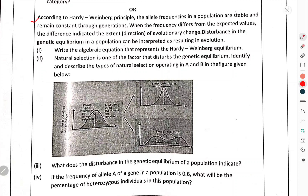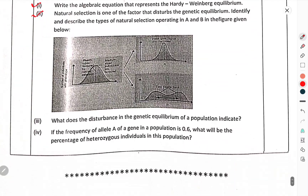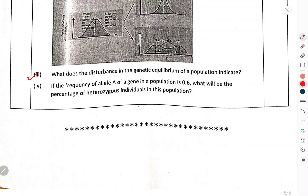According to the Hardy-Weinberg principle, the allele frequencies of a population are stable and remain constant through generations. When the frequency differs from expected values, the difference indicates the extent of evolutionary change. This means it is the genetic equilibrium of a population that can be interpreted as resulting in evolution. Write the algebraic equation representing Hardy-Weinberg equilibrium. Natural selection is one of the factors that disturbs genetic equilibrium. Identify and describe the types of natural selection operating in figures A and B. What does a disturbance in the genetic equilibrium of a population indicate? If the frequency of allele A in a gene pool of a population is 0.6, what will be the percentage of heterozygous individuals in this population?